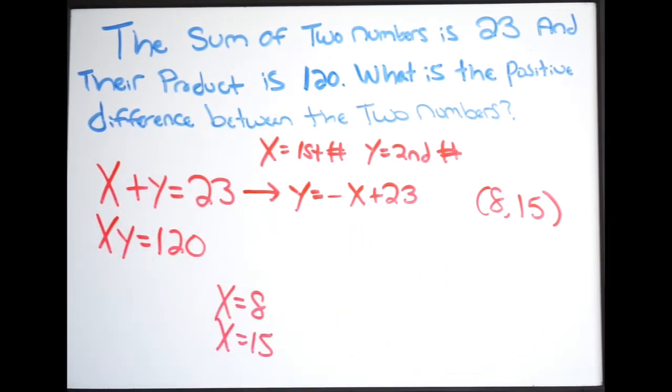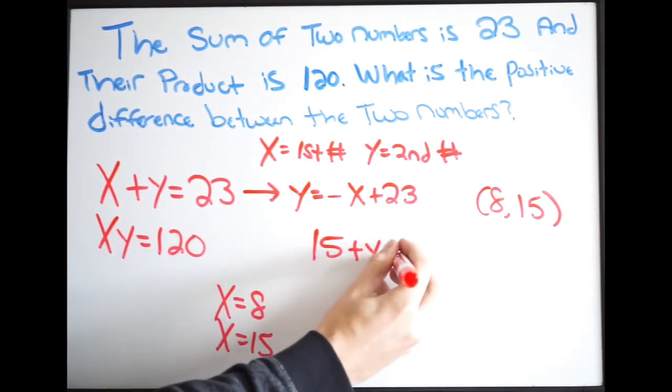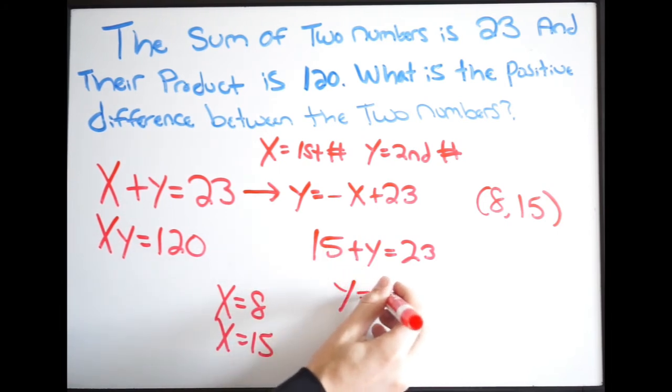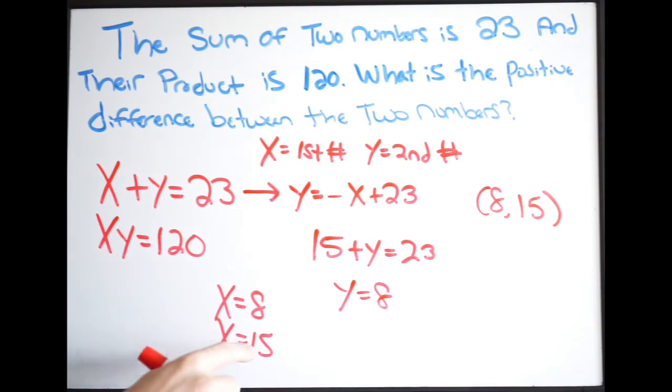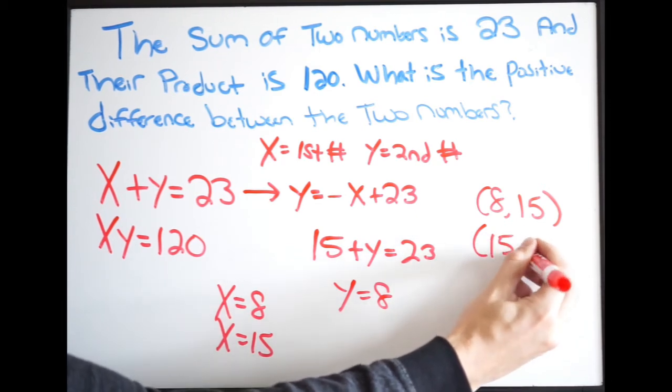Erasing this. So let's plug in a 15 for x. So we get 15 plus y equals 23. Again, we're going to subtract both sides, in this case, by 15. So we subtract both sides by 15. We get y is equal to 8. Again, this is going to be a point. So I can write here 15 comma 8.